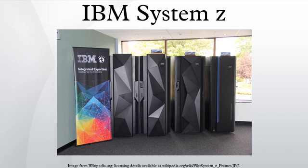IBM's Z Enterprise system, announced in July 2010 with the Z196 model, is designed to offer both mainframe and distributed server technologies in an integrated system. The Z Enterprise system consists of three components: a System Z Server, the IBM Z Enterprise BladeCenter Extension, and the management layer — IBM's Z Enterprise Unified Resource Manager — which provides a single management view of Z Enterprise resources.